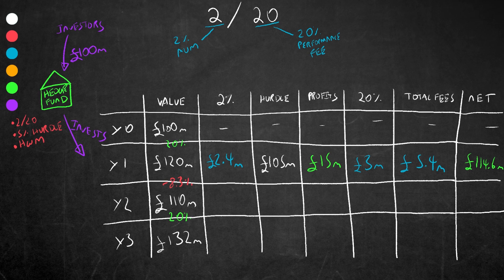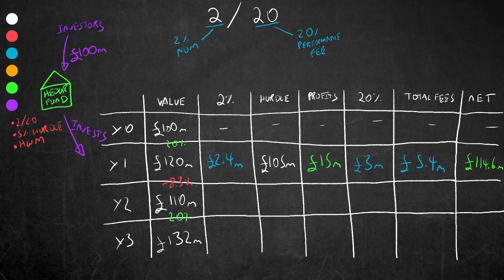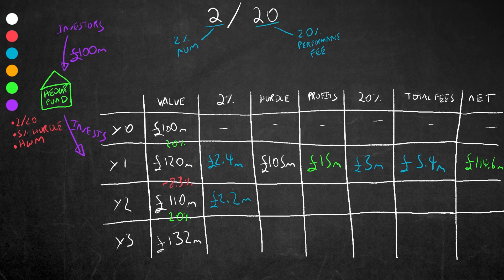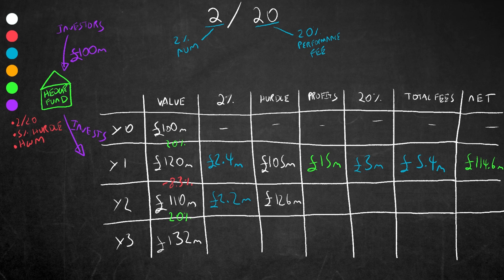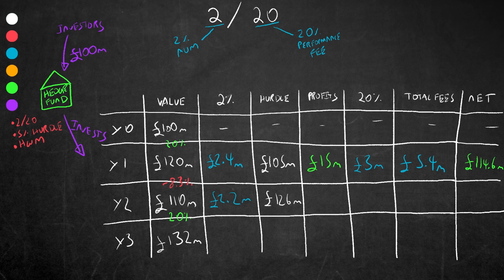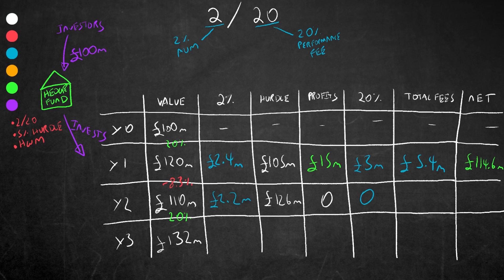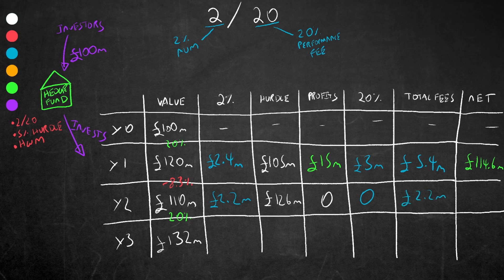In year two, the fund's value decreases to 110 million. The management fee is still 2 percent, but this time it only comes to 2.2 million. The hurdle rate remains 5 percent above the previous value of 120 million, which comes to 126 million. As this is not being achieved, the hedge fund managers don't receive anything in terms of an incentive fee. All the managers receive this time is the 2.2 million management fee, leaving the net value at 107.8 million.